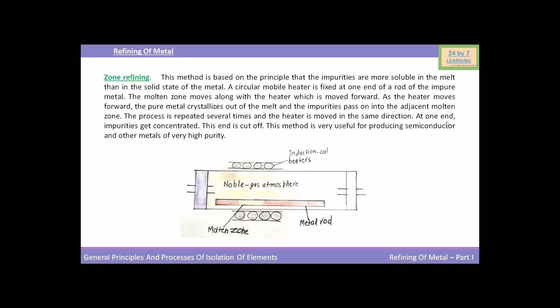At one end, impurities get concentrated, and this end is cut off. This method is very useful for producing semiconductors and other metals of very high purity.